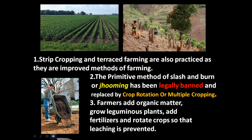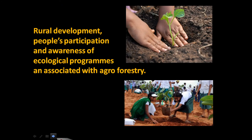Crop rotation means alternating crops over time — for example, first growing rice, then replacing it with wheat, then another crop. Multiple cropping means dedicating different portions of a large field to different crops simultaneously. Additionally, farmers add organic matter, grow leguminous plants, add fertilizers, and rotate crops so that leaching can be prevented.